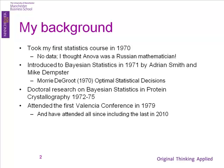Four years later we had the second Valencia conference, and it was nearly the end of Bayesian statistics — because we went on an outing on a boat and nearly all were drowned. I survived because I don't swim. The rest survived because fortunately my wife and a couple of other people swam and got them out. But it was really quite nearly the end of Bayesian statistics.